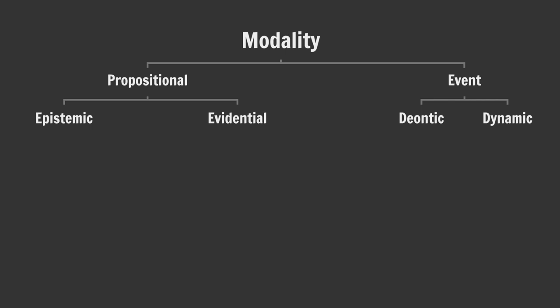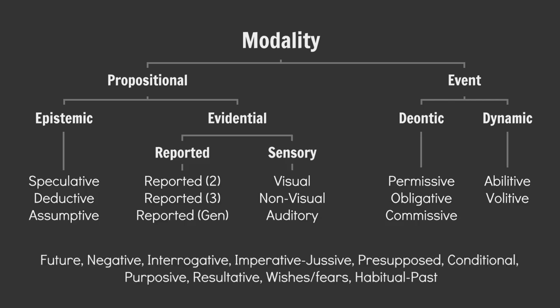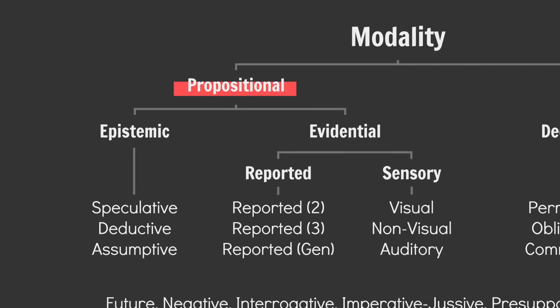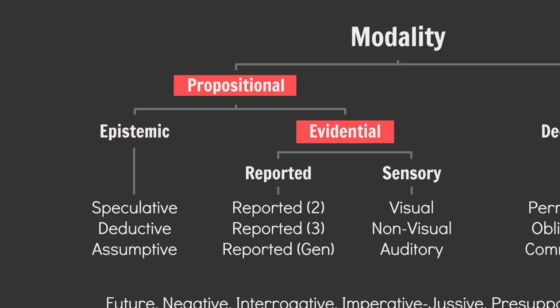Human languages feature many different flavors of modality. Starting on the left branch, propositional modalities are concerned with the reliability of a speaker's statements. Languages usually deal with propositional modality in one of two ways: epistemically or evidentially.